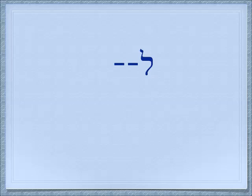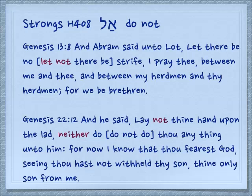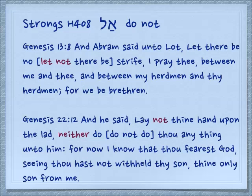And all the infinitives use this Lamed — you can't use the two-letter word El for infinitives. Infinitives — to go, to be, to have — are the same as they are in English. The last word, and it's very unusual to have three different vowels under the same pair of letters, is the patach, and this will be Al. Al is a negation particle particularly used with requests or commands — 'Don't do that.' Genesis 13:8 — 'Abraham said to Lot, let there be no — let not there be Al — strife, I pray thee, between me and thee, and between my herdman and thy herdman, for we are brethren.' Genesis 22:12 — 'And he said, lay not thine hand upon the lad, neither do anything unto him, for now I know that thou fearest God, seeing thou hast not withheld thy son, thine only son, from me.'